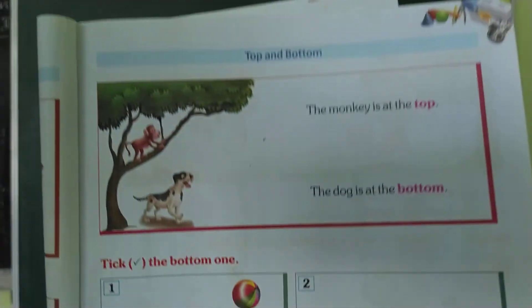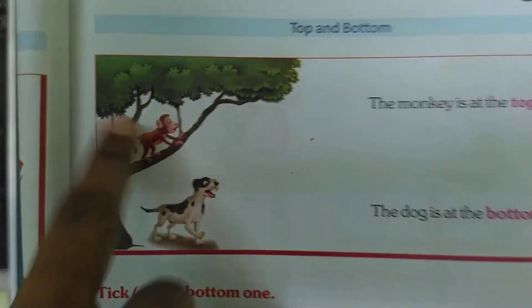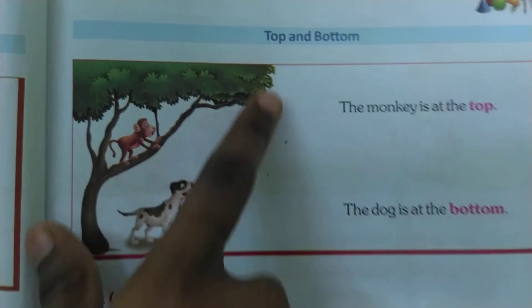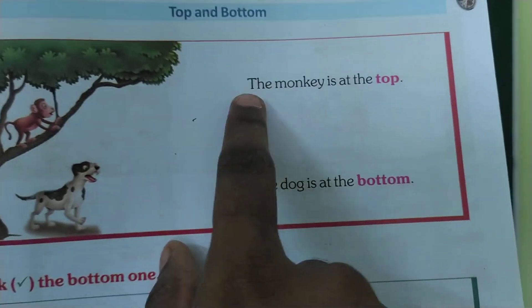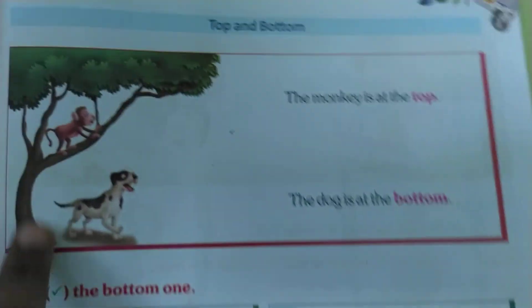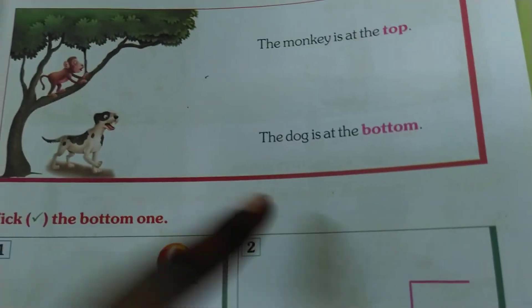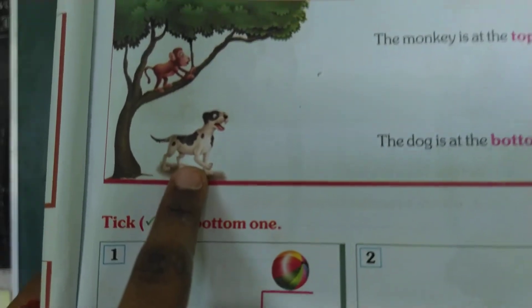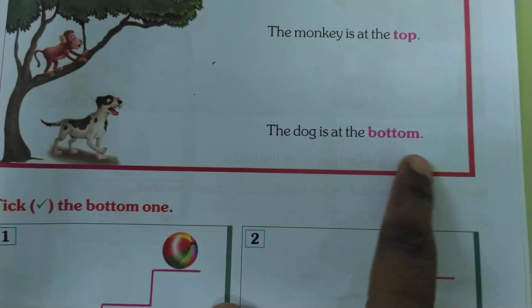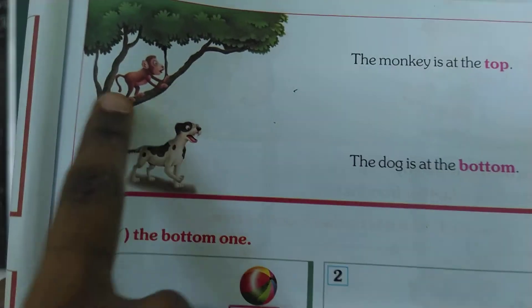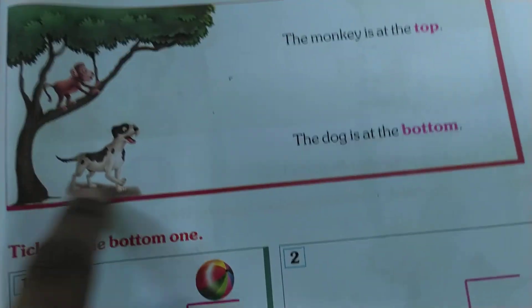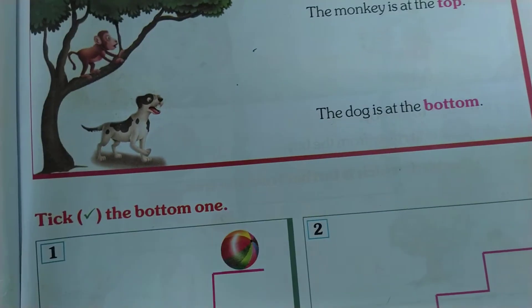Here we can observe a tree, a monkey, and a dog. The monkey is at the top of the tree. The dog is at the bottom. The monkey is at the top and the dog is at the bottom.